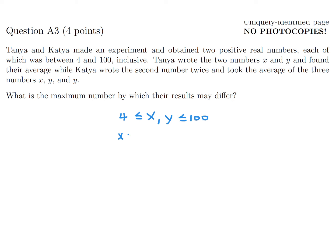So the first average is x plus y divided by 2, and the second average is x plus y plus y divided by 3. And we want these numbers to differ by as much as possible.